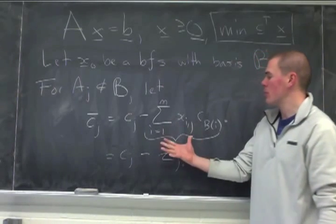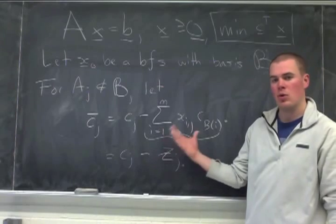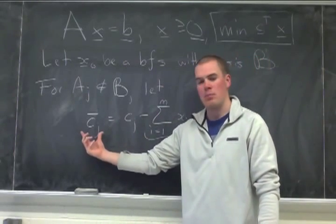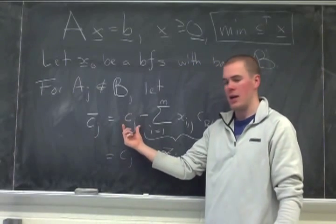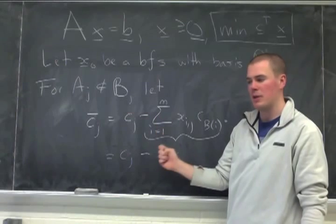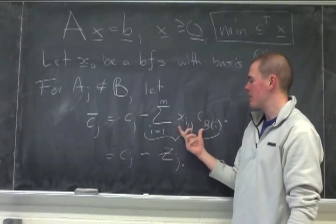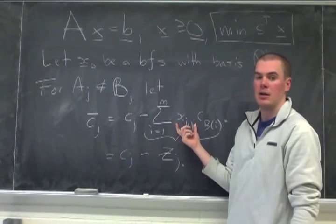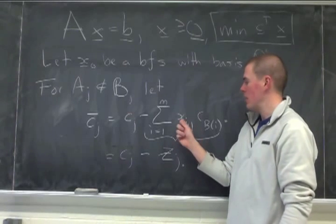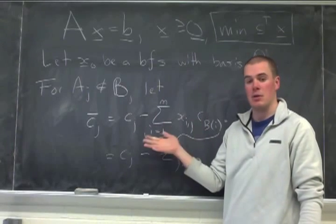Observe that this formula does hold over the basis columns. If I think about cj bar, I'm going to take cj, and then I'm going to subtract these things. But if this actually appears, if this column appears in the basis, then what happens is, I get zeros here, except for the jj position, and then I'm going to get a 1 times the cost. So it ends up being 0.